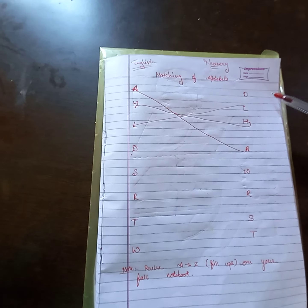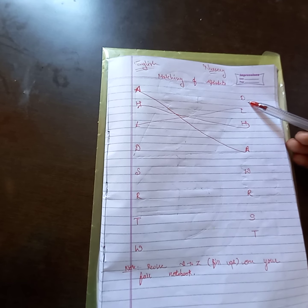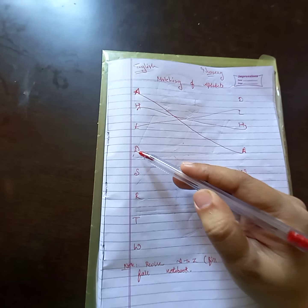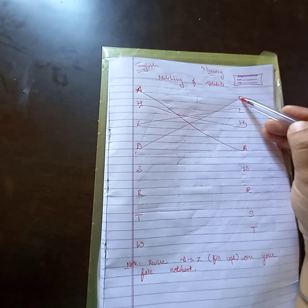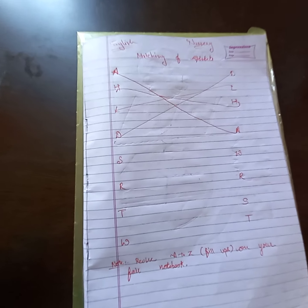Next is D for dog. Is side dekho D for dog ka hai — this one, okay? D for dog, okay students?